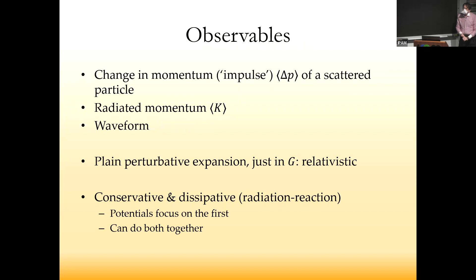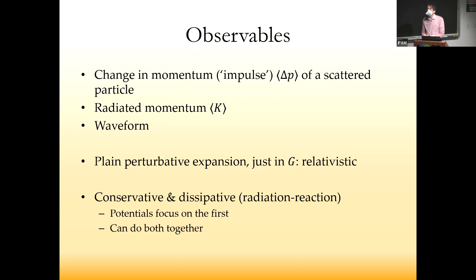The observables we've looked at to date are things like the impulse, the change in momentum of a scattered particle. From that, you can extract the scattering angle and the total radiated momentum. Today I'm going to show you the waveform. We're working fully relativistically, keeping c equals one. It's just an ordinary perturbative expansion in Newton's constant or in e. From this viewpoint, it's very natural to do both conservative and dissipative terms together.